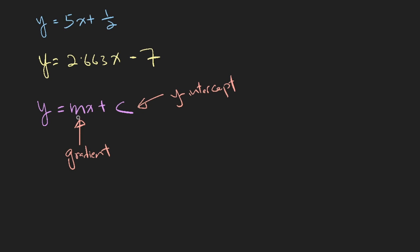So the gradient is the number that sticks to x. So in this example, 5 will be the gradient, and in the second example, 2.663 is the gradient. Now, the gradient is how steep the slope is. So if the gradient is a positive number, both of these examples are positive numbers, it's like that.